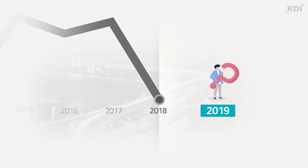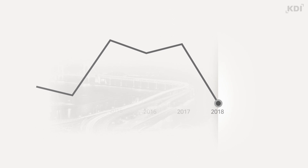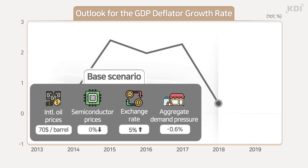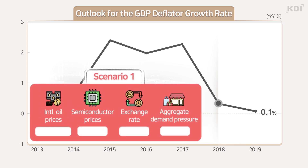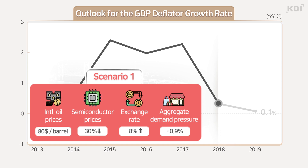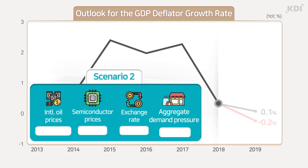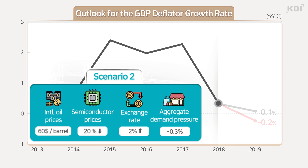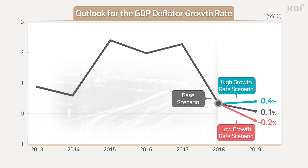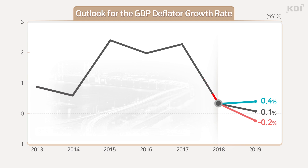Based on these results, the outlook for the GDP deflator in 2019 shows three scenarios: if the decline in demand eases and oil prices remain flat while semiconductor prices maintain a downtrend of 20%, the GDP deflator will mark 0.1%. However, if demand remains sluggish and oil prices rise while semiconductor prices fall, the GDP deflator will stand at minus 0.2%. Finally, if there is a rebound in demand, oil prices fall, and semiconductor prices show a rapid recovery within the year, the GDP deflator will post 0.4%. The growth in the GDP deflator rate is expected to remain low as the downtrend from last year is expected to continue while semiconductor price trends go up.